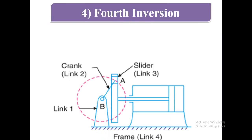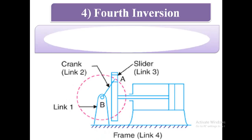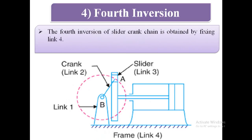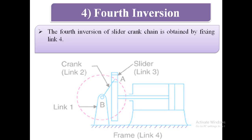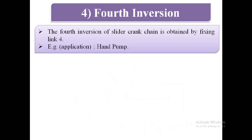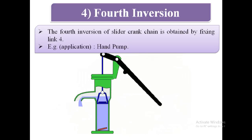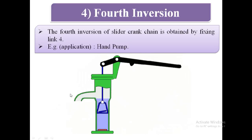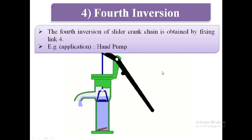Fourth inversion: the fourth inversion of slider crank chain is obtained by fixing link 4. As shown in the image, link 4 is fixed. The example or application is the hand pump. You can see the working of a hand pump in the image.